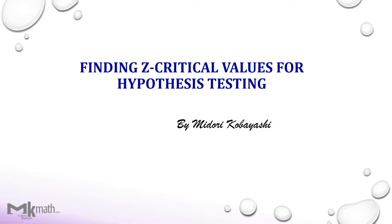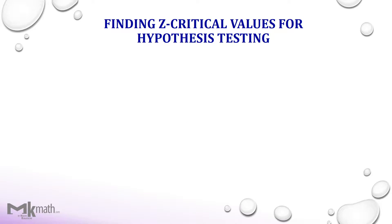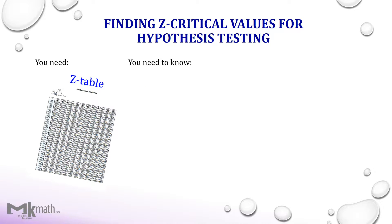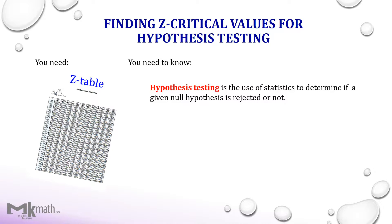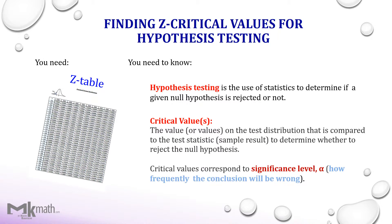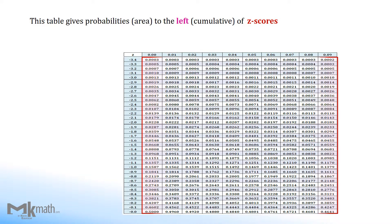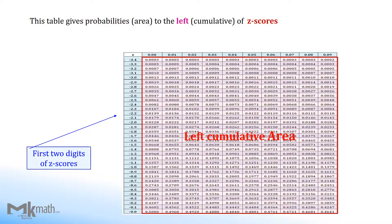In this video, I'd like to show how to find z-critical values for hypothesis tests. You need a cumulative z-table, and you also need to know the meanings of hypothesis testing and critical values. This z-table gives the area or probability to the left of z-scores. The first column shows the first two digits of z-scores, and the top row shows the second decimal place of z-scores.